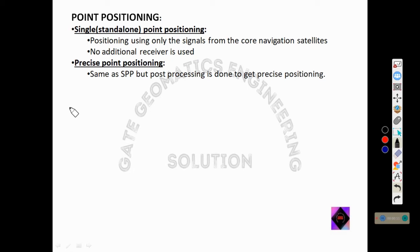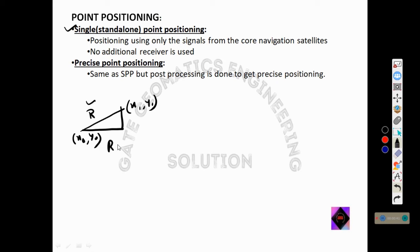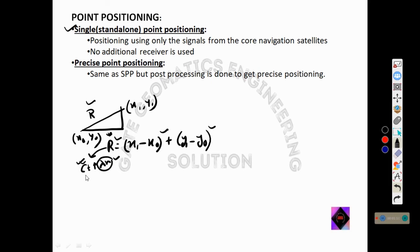Now let us see the various types of data collection methods. Point positioning — also called single or standalone point positioning — refers to the ability to determine one's location using only signals from core navigation satellites. If a point has coordinates (x0, y0) and the satellite is at (x1, y1), the distance r is calculated as r² = (x1−x0)² + (y1−y0)². This r is calculated using r = ct + λN for carrier-based or r = ct for code-based measurement.